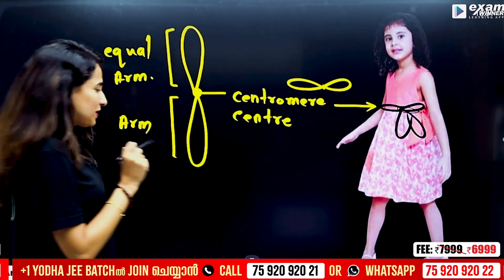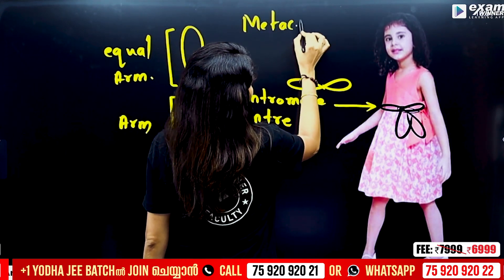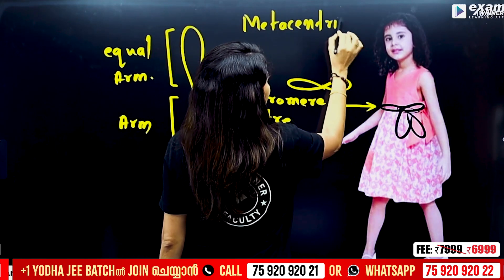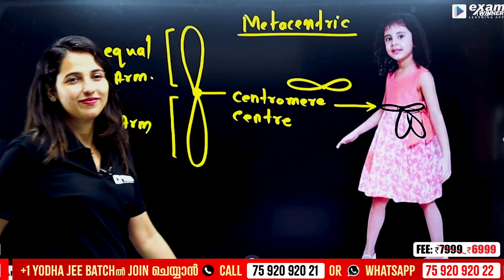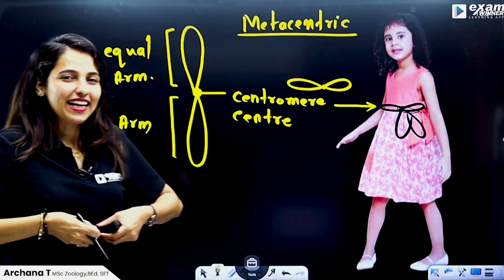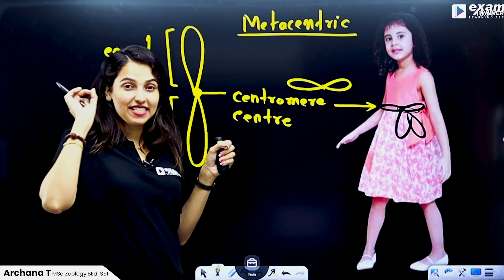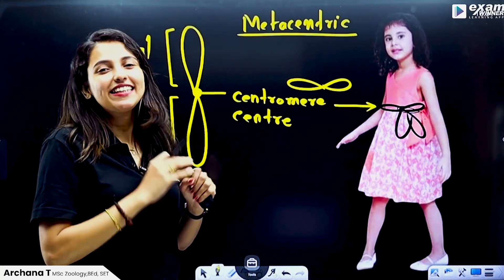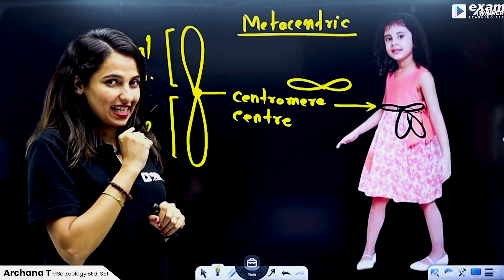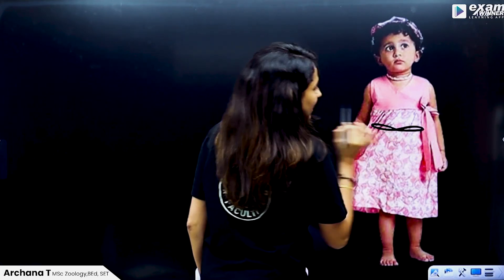Chromosome has equal arms. The arm is equal arm and the top is equal length arm. What do we call this? We call it a name. In the center, the top arm is equal length. We call it metacentric. Metacentric chromosomes. This chromosome is equal to the center — we call it metacentric. We call it a different type of center.